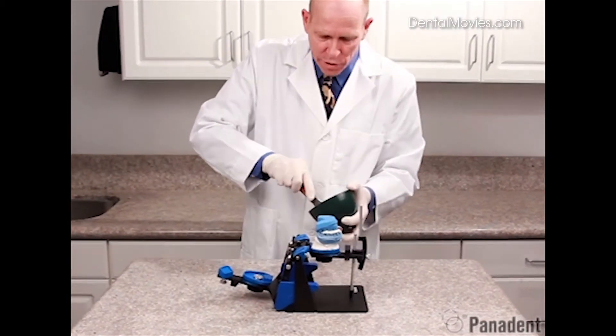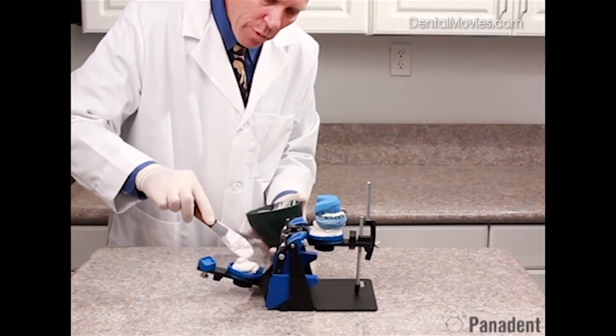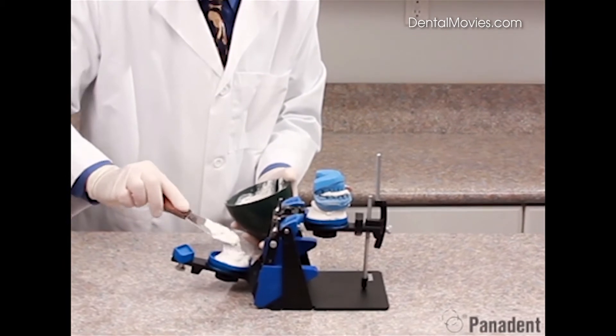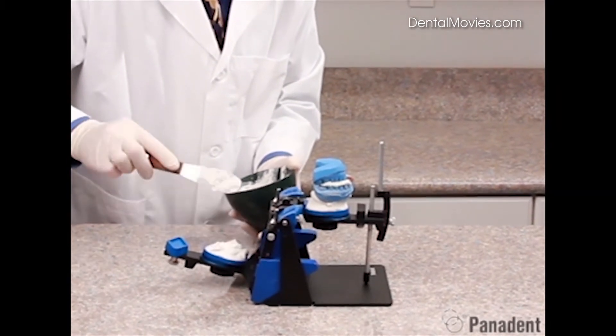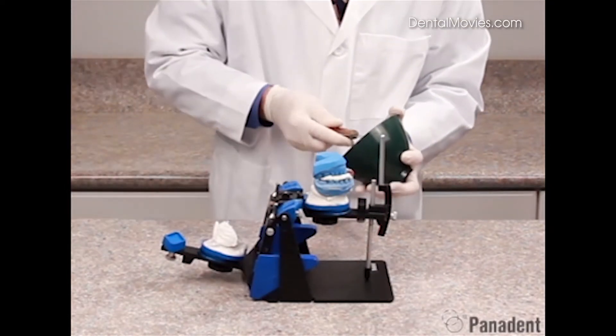We've mixed the plaster, and we first want to add some plaster to our lower mounting plate. Make sure we get it around the center retention lug really well. And we want to go ahead and fill that mounting plate up because we have retention lugs around the lateral edges.